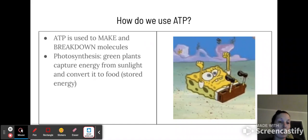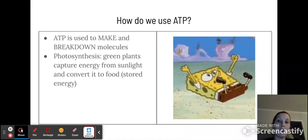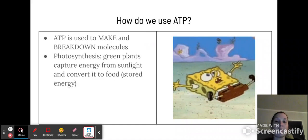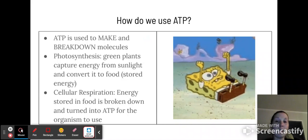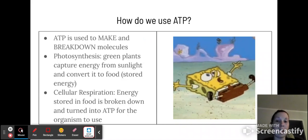And one way we do this, or one way plants do this, is photosynthesis. So they capture energy from sunlight and then they convert it to food, which is their stored energy. And then cellular respiration, which both plants and animals do, is where energy is stored in food and it's broken down, turned into ATP for us to use.